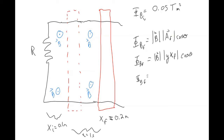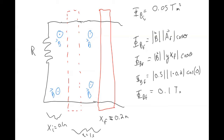When you plug in your numbers: 0.5 times 1 times 0.2 times cosine 0, again cosine 0 is 1, so the final flux is 0.5 times 0.2, which gives 0.1 Tesla·meters squared.